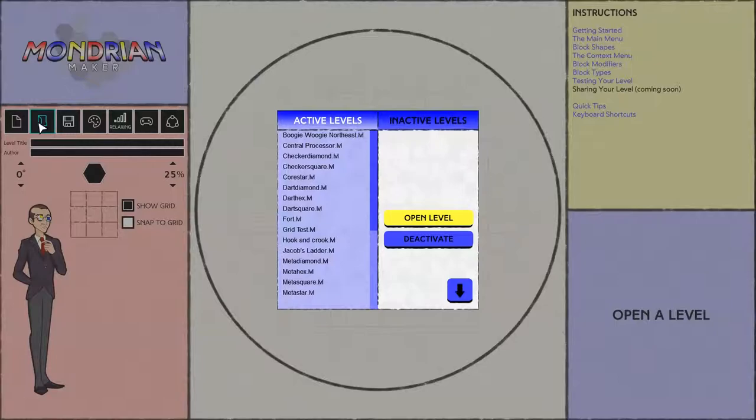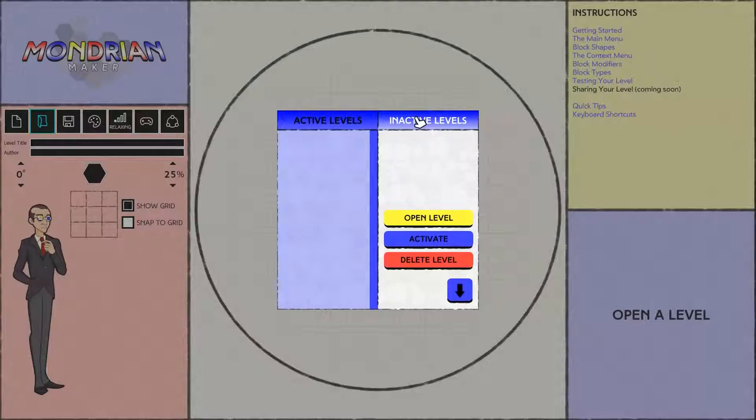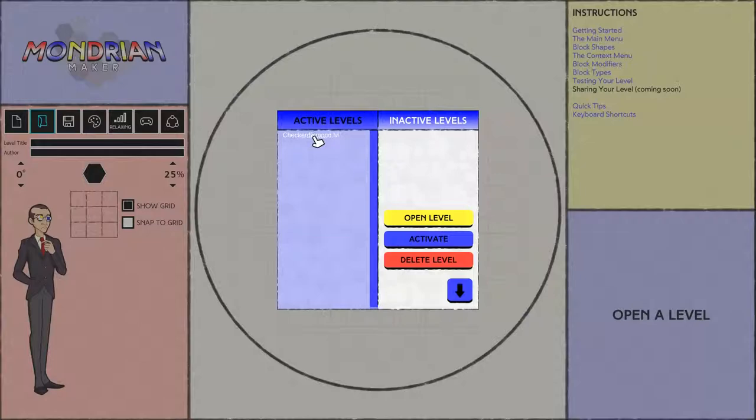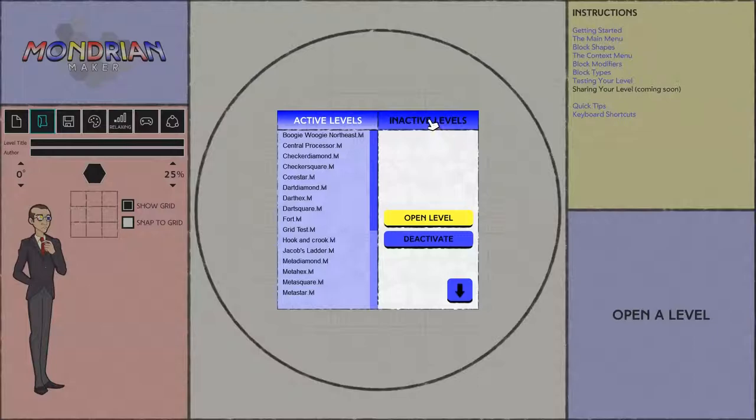We have Open Level, which lets you open a level file from your active or inactive levels folders. Active levels are the levels that the game will actually search for when playing, and inactive levels are ones that you want the game to ignore. This window also includes activate and deactivate buttons, so, for instance, if I were to go to this level and hit deactivate, it would end up in my inactive levels folder, and if I reactivate it, it goes back to my active levels folder.